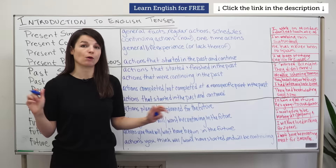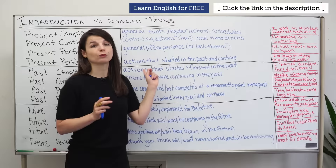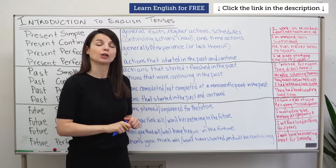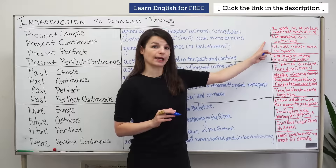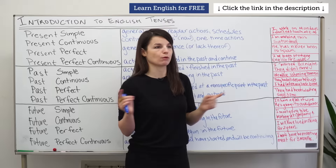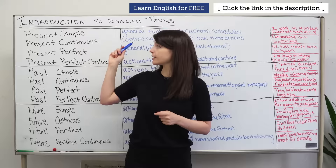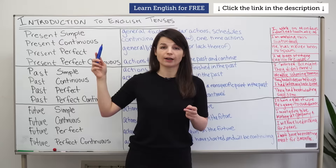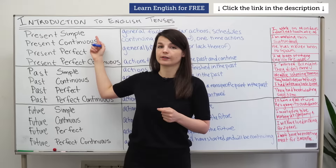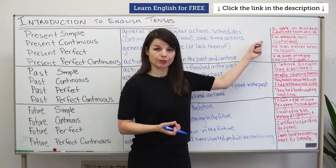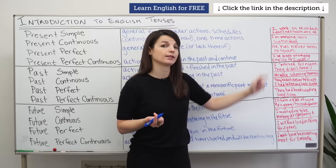We can also use present continuous for one-time actions, which relates a little to future tense. For example, 'I'm working this Saturday.' Students ask: what's the difference between 'I'm working this Saturday' and 'I work this Saturday'? If you usually work on Saturdays, use present simple: 'I work on Saturdays.' But if this Saturday is special and you don't usually work, use continuous: 'I'm working this Saturday' — it sounds like that's not typical for you.